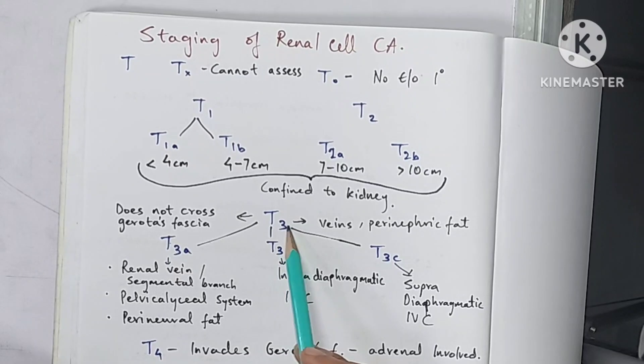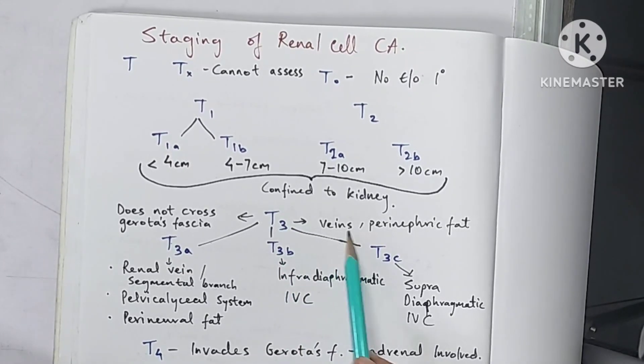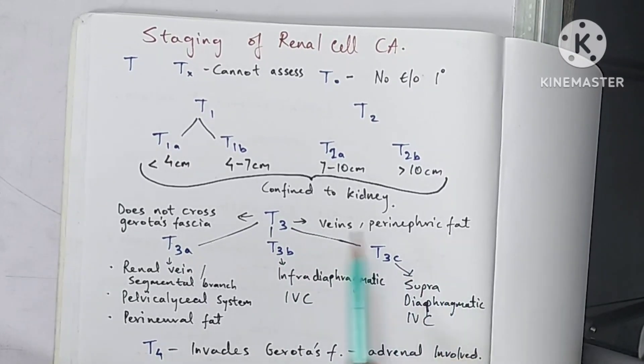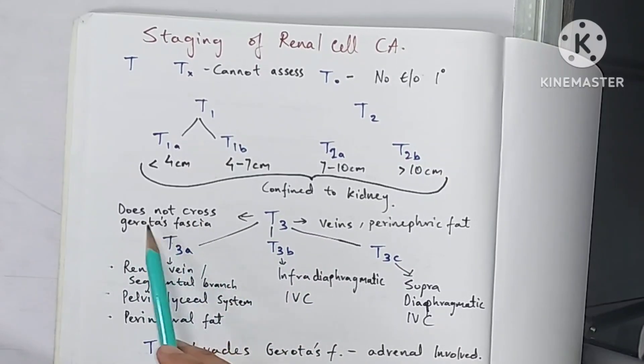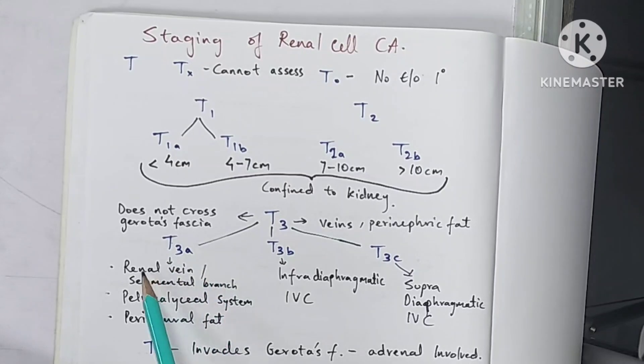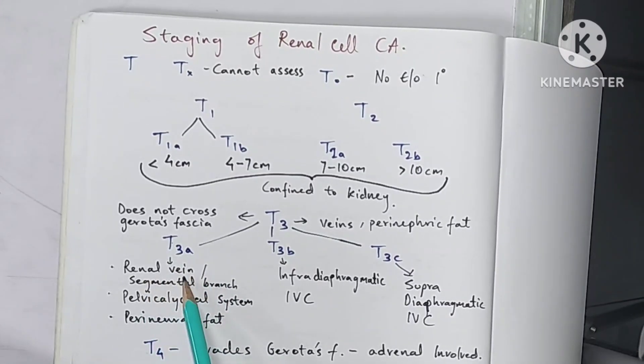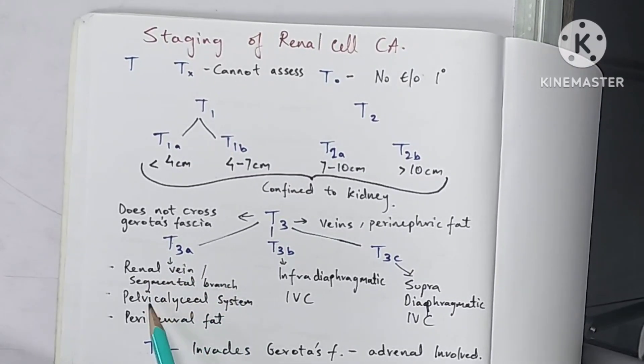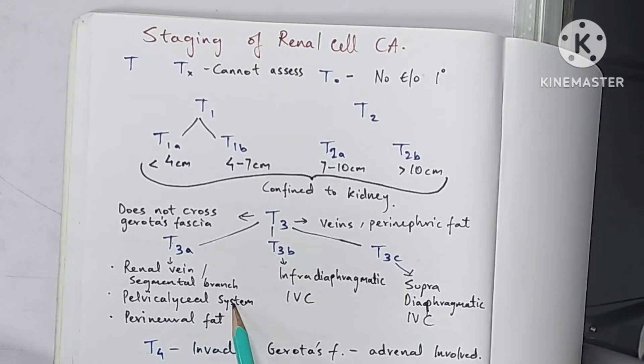Then we see T3. T3 is when there is venous involvement or perinephric fat involvement and the tumor does not cross the gerota's fascia. Then T3a when there is involvement of renal vein or the segmental branch or the pelvicalyceal system or the perinephric fat.